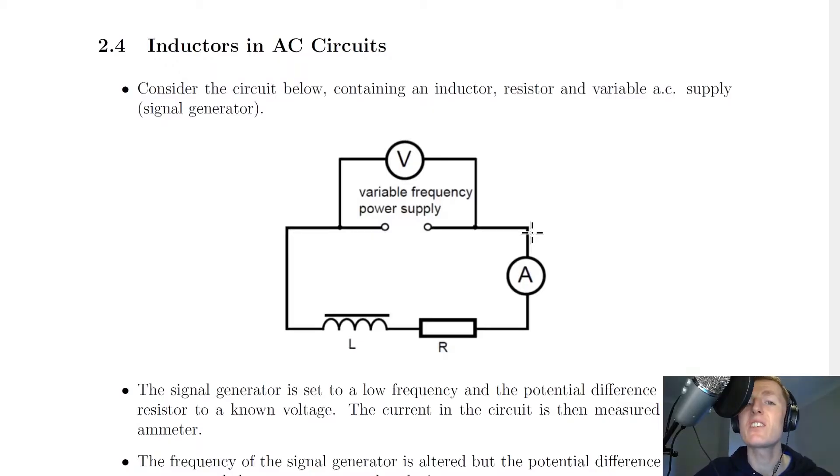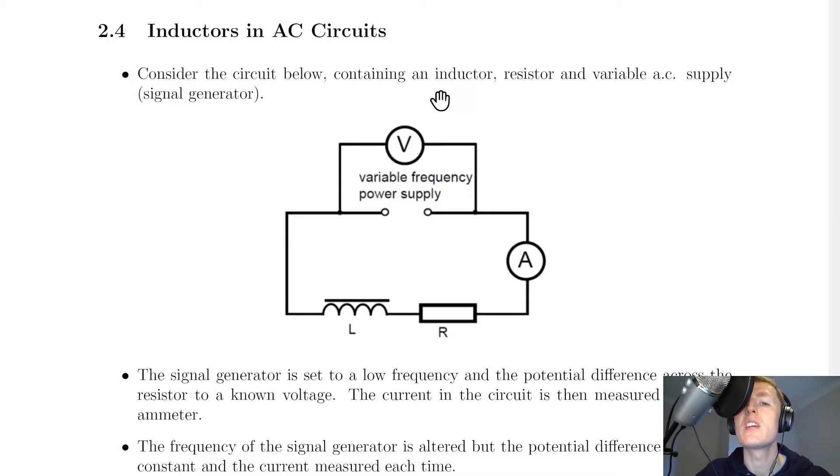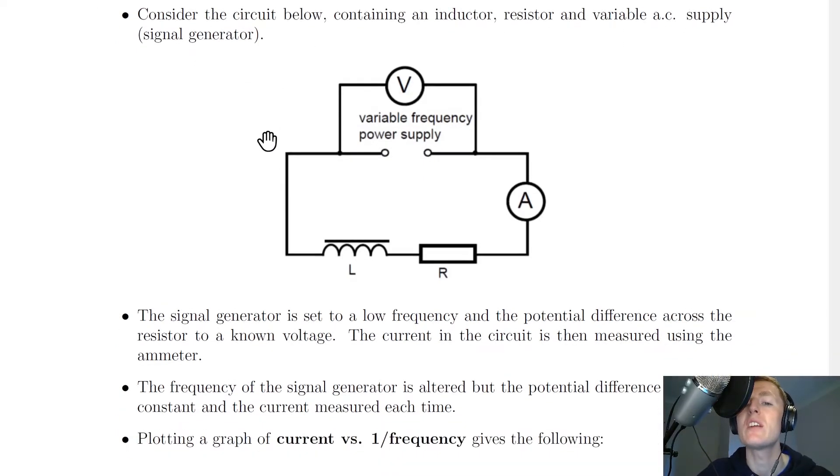Now we've already seen inductors and DC circuits, but now we're looking at inductors and AC circuits, i.e. ones in which there is an AC supply. We're going to start by considering the circuit below containing an inductor, resistor and variable AC supply, i.e. a signal generator.